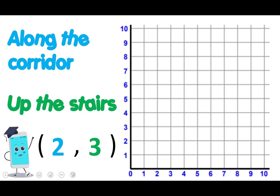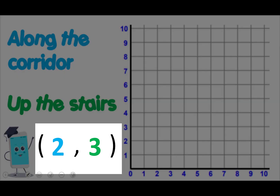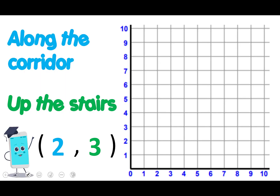A phrase I like to use to remember how to read coordinates is along the corridor, then up the stairs. When we see coordinates, we see them in a bracket. The first digit tells us how far we have to move along the x-axis, which is the one that runs along the bottom. The second coordinate, the second digit in the bracket, tells us how far we need to travel up the y-axis. I also hear a lot of people say 'y to the sky.' So the x-axis runs along the bottom and the y-axis runs up. We first move along the x-axis and then we move along the y-axis.